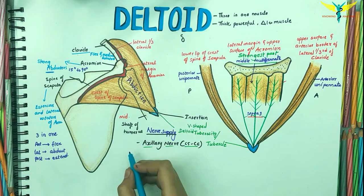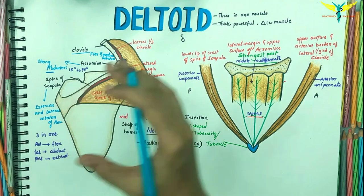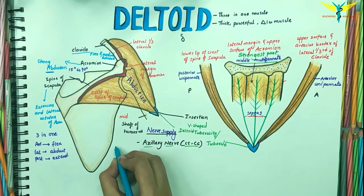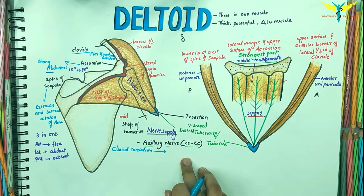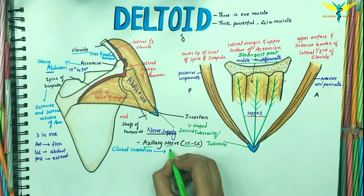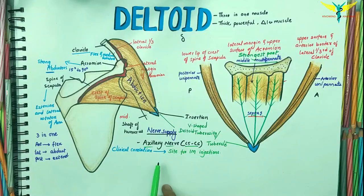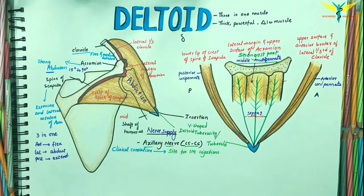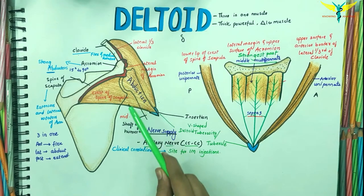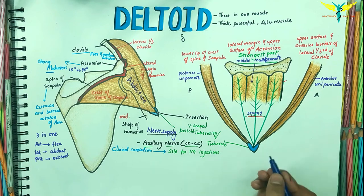Coming to the clinical testing of the deltoid, it can be easily seen and felt to contract when the arm is abducted against resistance. For clinical correlation, the deltoid is the main site of intramuscular injections, commonly given in the lower half of the deltoid to avoid injury to the axillary nerve, as the axillary nerve winds around the surgical neck of the humerus. In actual clinical practice, the intramuscular injection is given in the upper outer quadrant of the deltoid region.